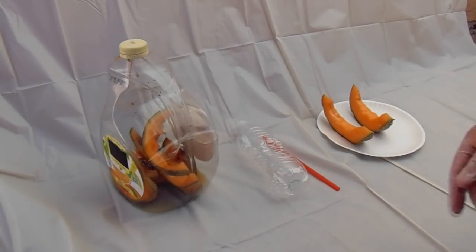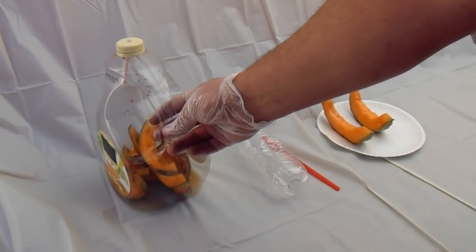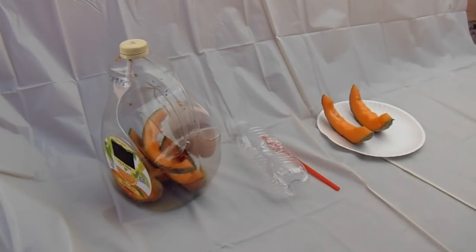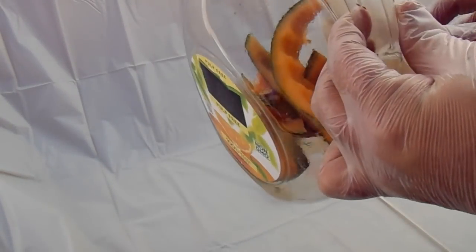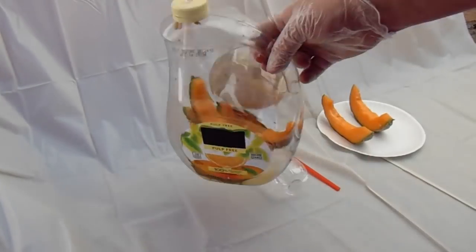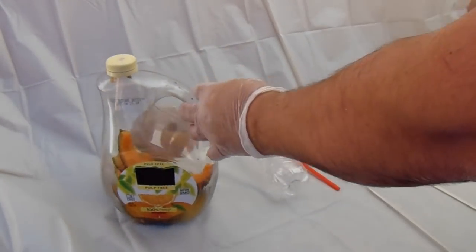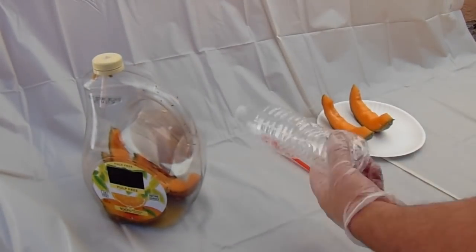Making a fruit fly trap is fairly easy. All you need is a water bottle, a straw, a knife, and some scissors. As you can see here, I caught some fruit flies using just a cantaloupe, an orange juice bottle, and a straw. That's all you need.